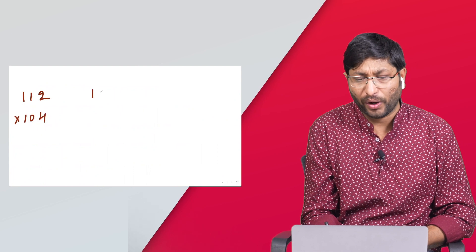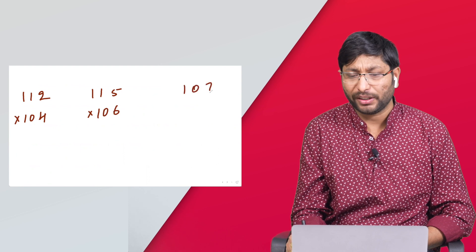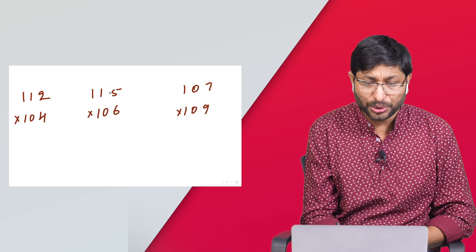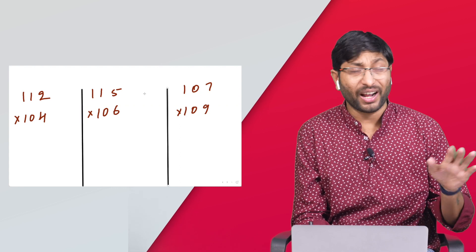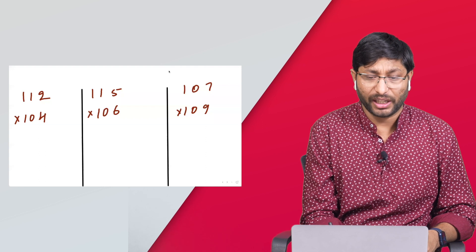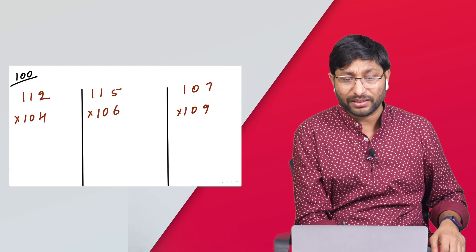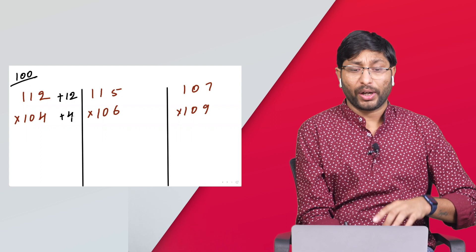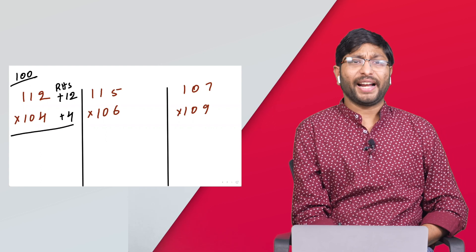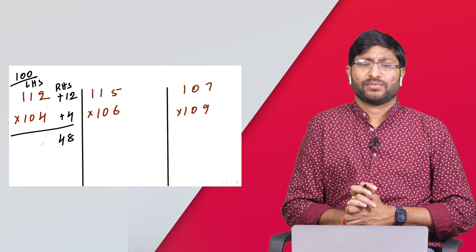Let me give you three more examples to make you perfect in this concept: 112 × 104, 115 × 106, and 107 × 109. For 112 × 104: by observing the numbers, the nearby base is clearly 100. Differences: +12 and +4. Right-hand side: 12 × 4 = 48. Left-hand side: 112 + 4 = 116. Answer: 11648.